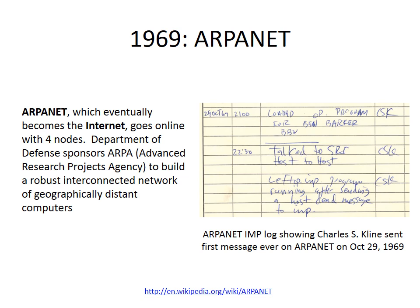In the 1960s, the Department of Defense sponsored ARPA to produce a robust network of computers spread over great distances in the U.S. ARPA created the ARPANET, which would later be known as the Internet. It went live in 1969 with four nodes — one at UCLA, one at Stanford, one at UC Santa Barbara, and one at the University of Utah. The first message ever transmitted over the ARPANET was the word "login" from UCLA to Stanford. Apparently the system crashed after it received the L and the O. I've been told on good authority that the Internet is a lot more reliable today.